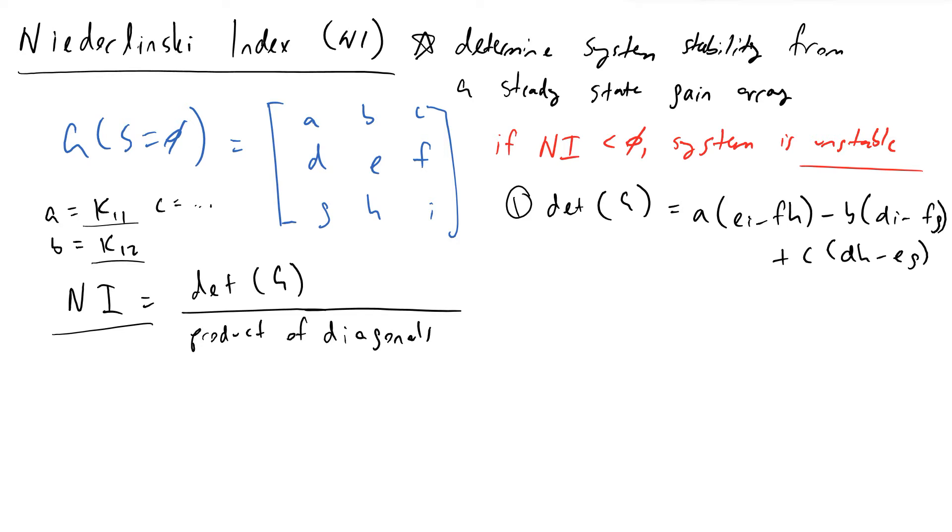And so once we have calculated our determinant, and I want to make a special note here that this is just a scalar quantity. These are just numbers, so this might be something like 5.2 for instance.